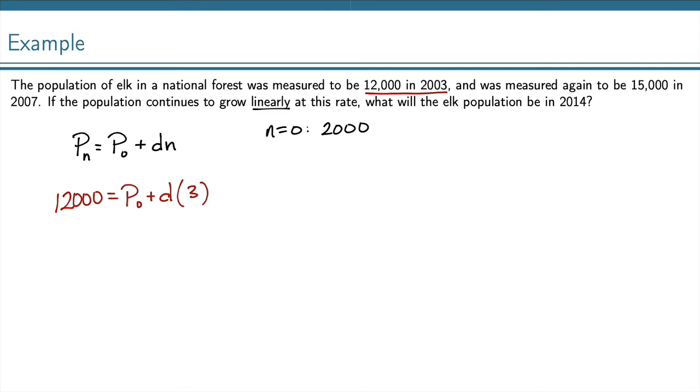I also have 15,000 in the year 2007. Well, I can plug that in here, 15,000 equals P0 plus D times, and then in the year 2007, that would be in year 7.